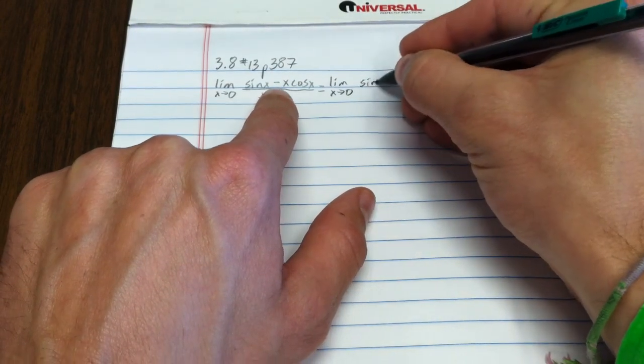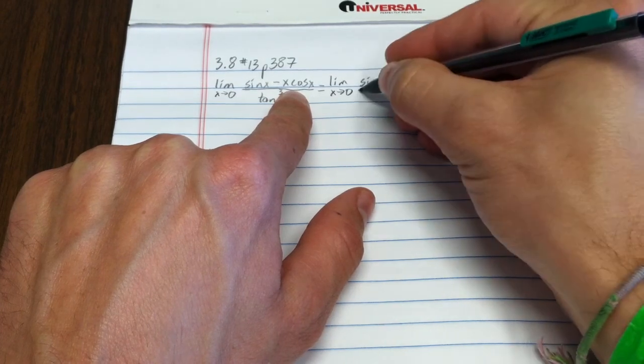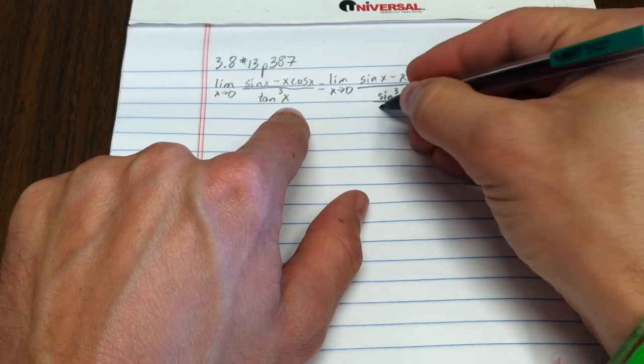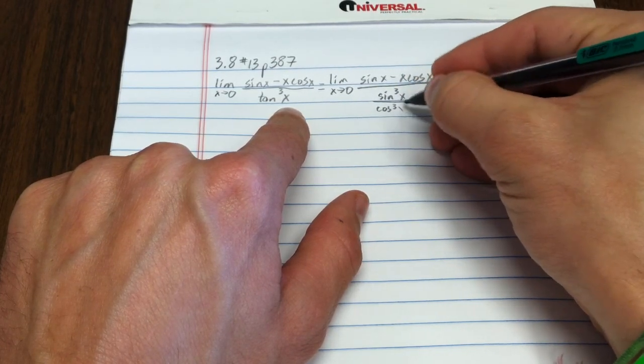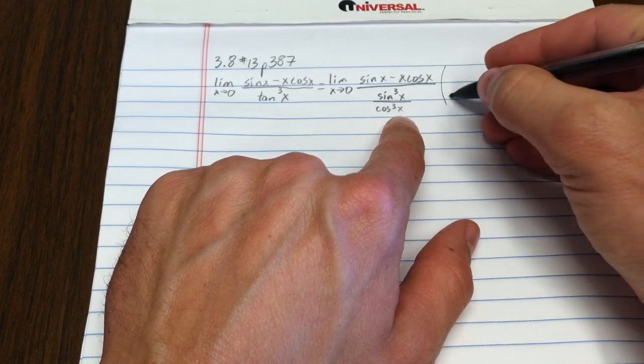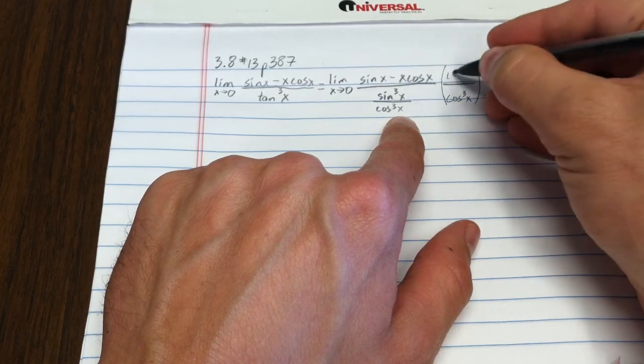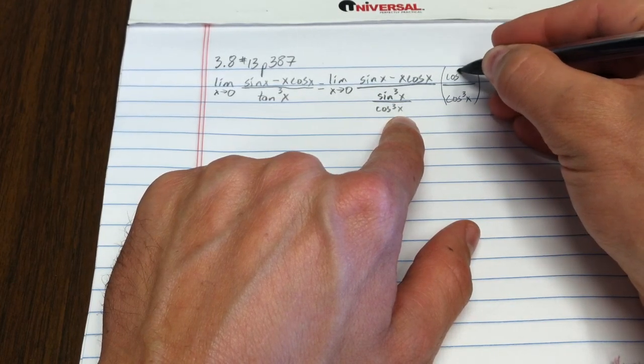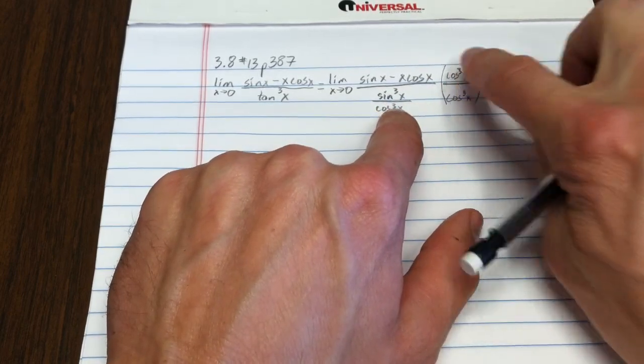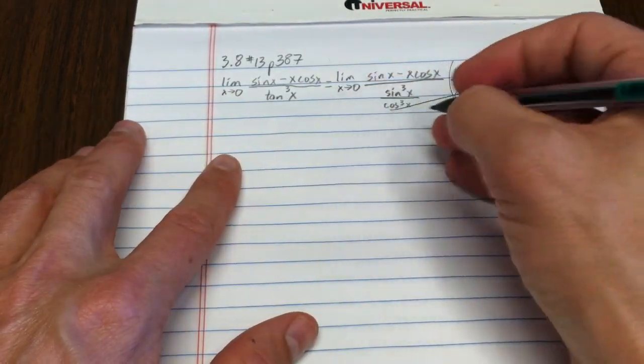Why don't we instead write the denominator as sine cubed x over cosine cubed x. Then I wouldn't want a fraction within a fraction, so I'll clear that out of the denominator by multiplying by cosine cubed x over cosine cubed x. Now if I were doing this on my own, I wouldn't bother to write this step. I would just write this cosine cubed up there. Those cancel, right? And what am I going to end up with?